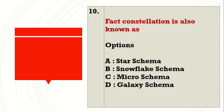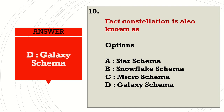Fact constellation is also known as Dash. Options: A. Star Schema, B. Snowflake Schema, C. Microschema, D. Galaxy Schema. Answer: Galaxy Schema.